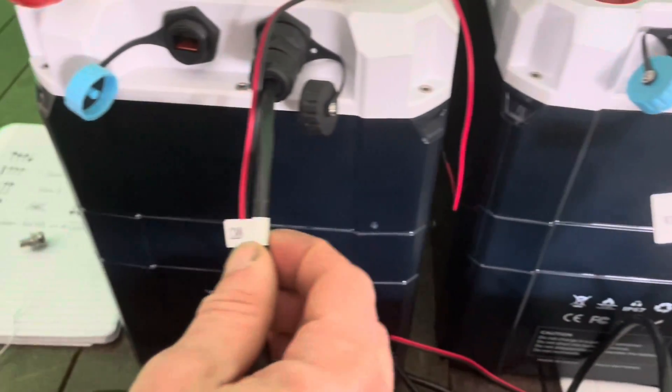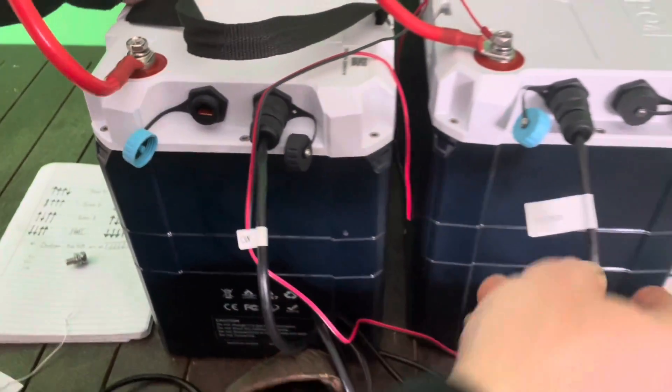The slave is going to be the one labeled CAN, and then the one that goes to the back of the Cerbo is going to be the one labeled INV or inverter.